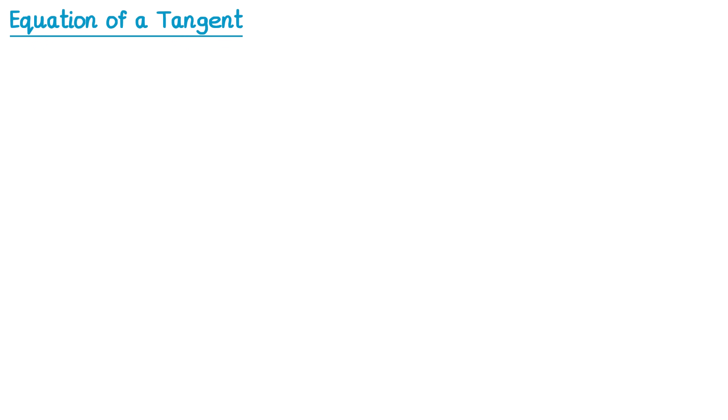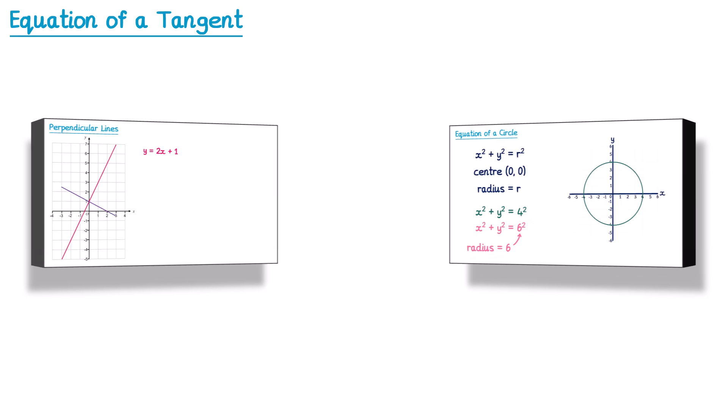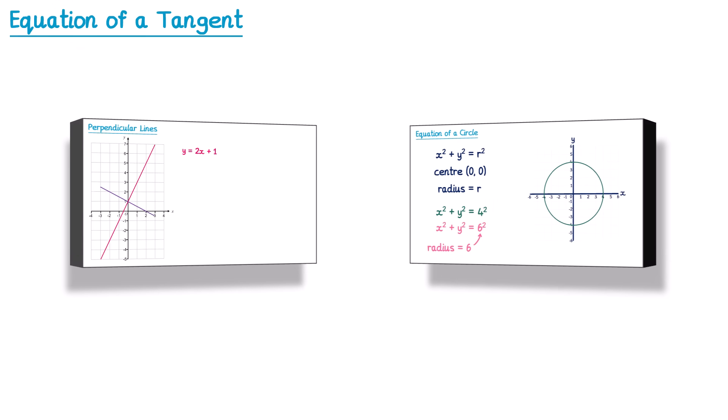In this video, we're going to learn how to find the equation of a tangent to a circle. This will use some knowledge from my previous videos on perpendicular lines and the equation of a circle. So if you're unsure on either of those topics, I'd recommend you go and check out those videos first. I'll put links to both of them in this video's description.